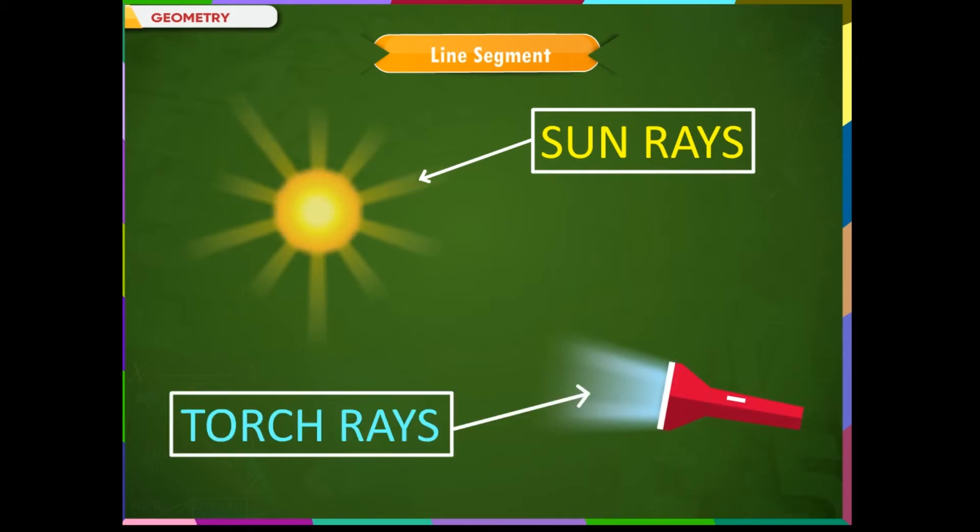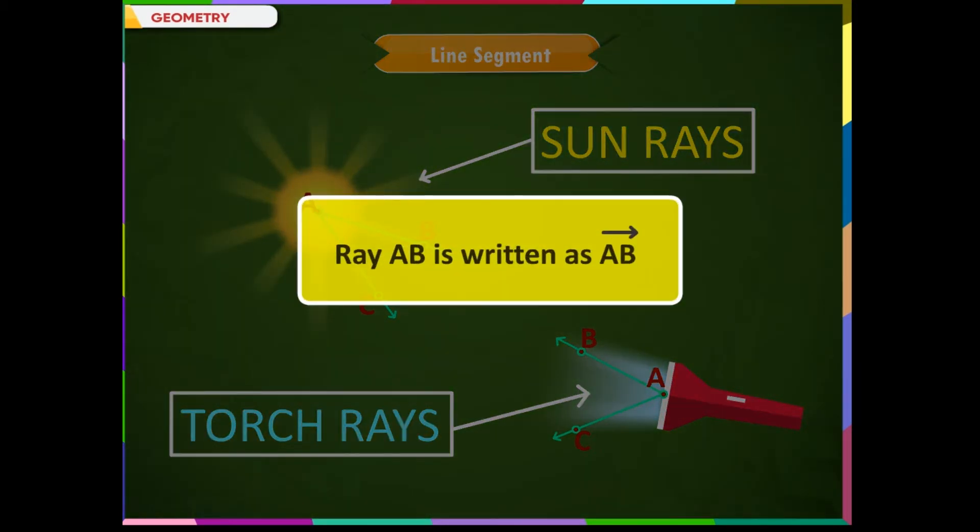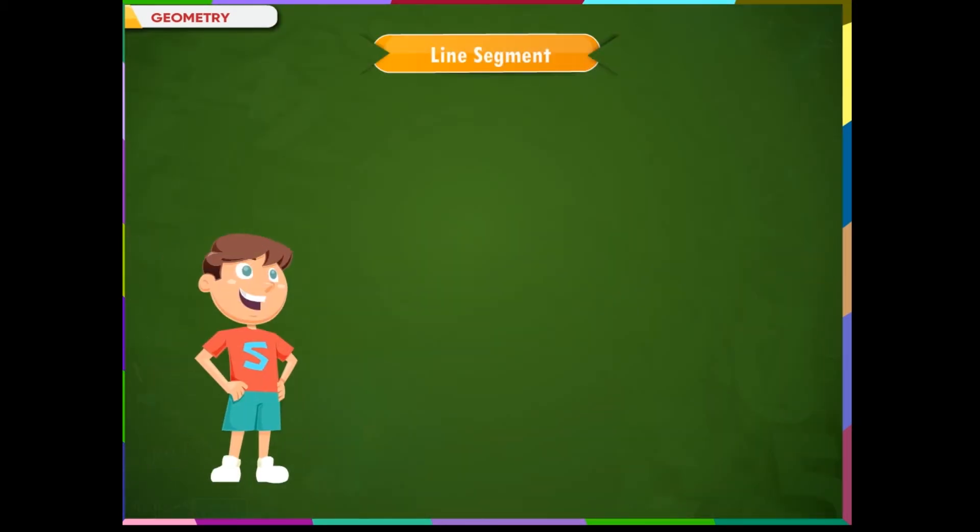What do we call the sun's light? We normally call it as sun's rays. We also get the rays of light from a torch. These lights give us an idea of rays. A ray originates from a fixed point and extends endlessly in one direction. As you can see here, point A is the fixed point and the rays are extending in one direction. If we put a point B here, we can say that this is ray AB.